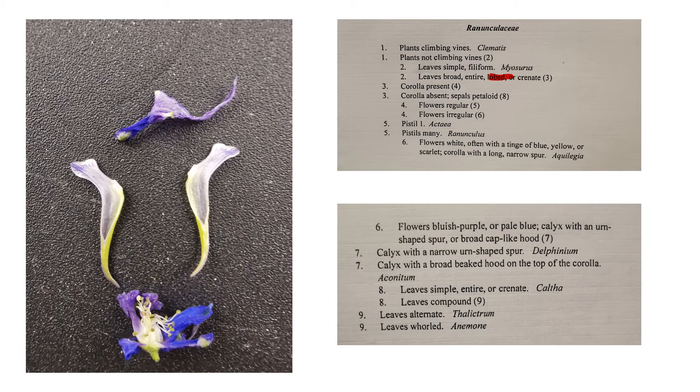And we can see that there is a corolla present. So we're on four very irregular flowers. And we can see some of the internal structure here in the ovary position. And so we are going to six. The flowers are not white. And they are bluish purple, an urn shaped spur, which is the case here. And we have a calyx with a narrow urn shaped spur. And that is this genus, Delphinium.